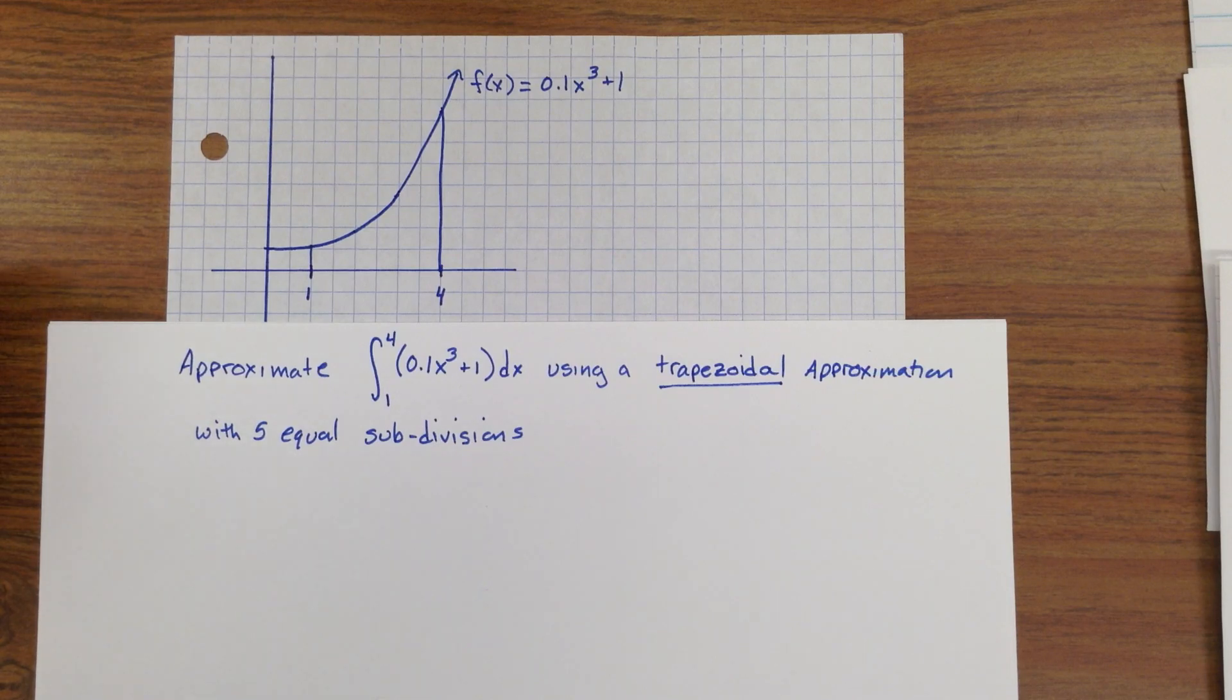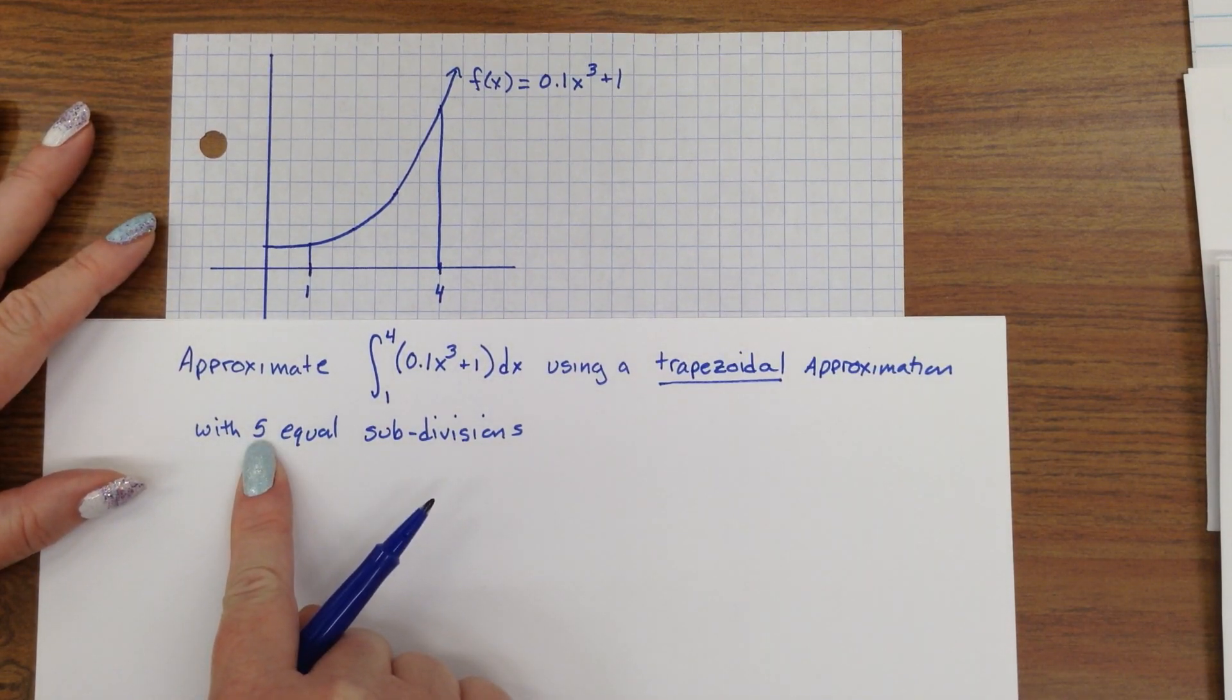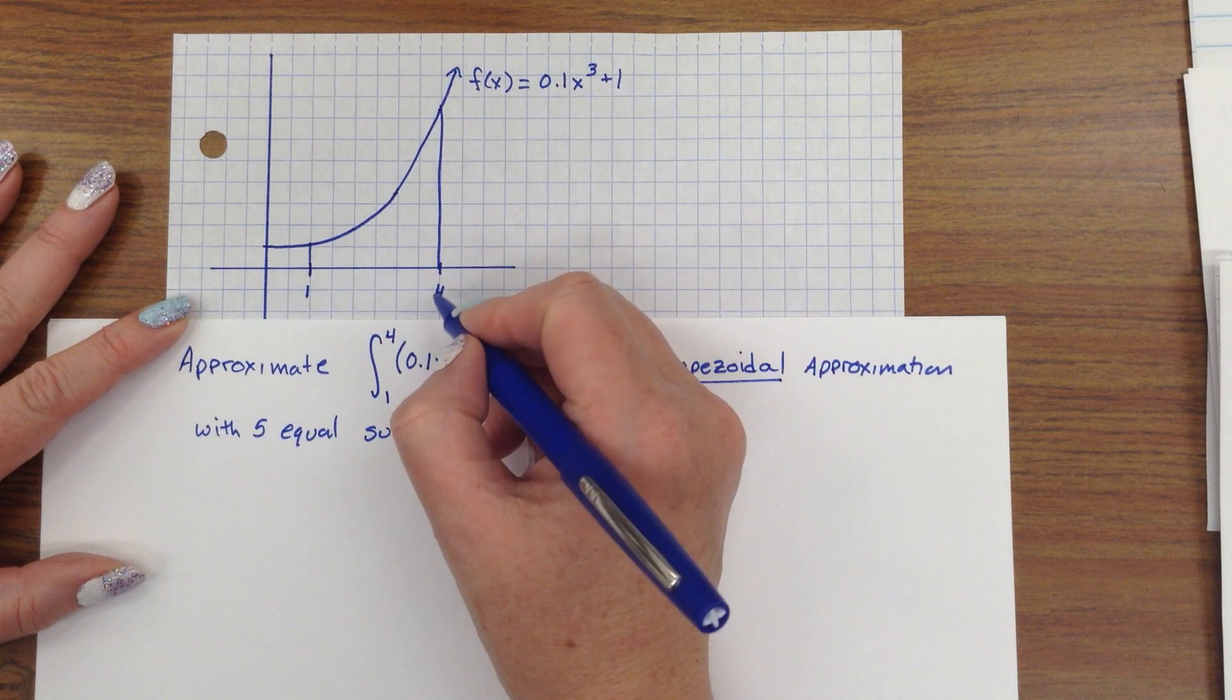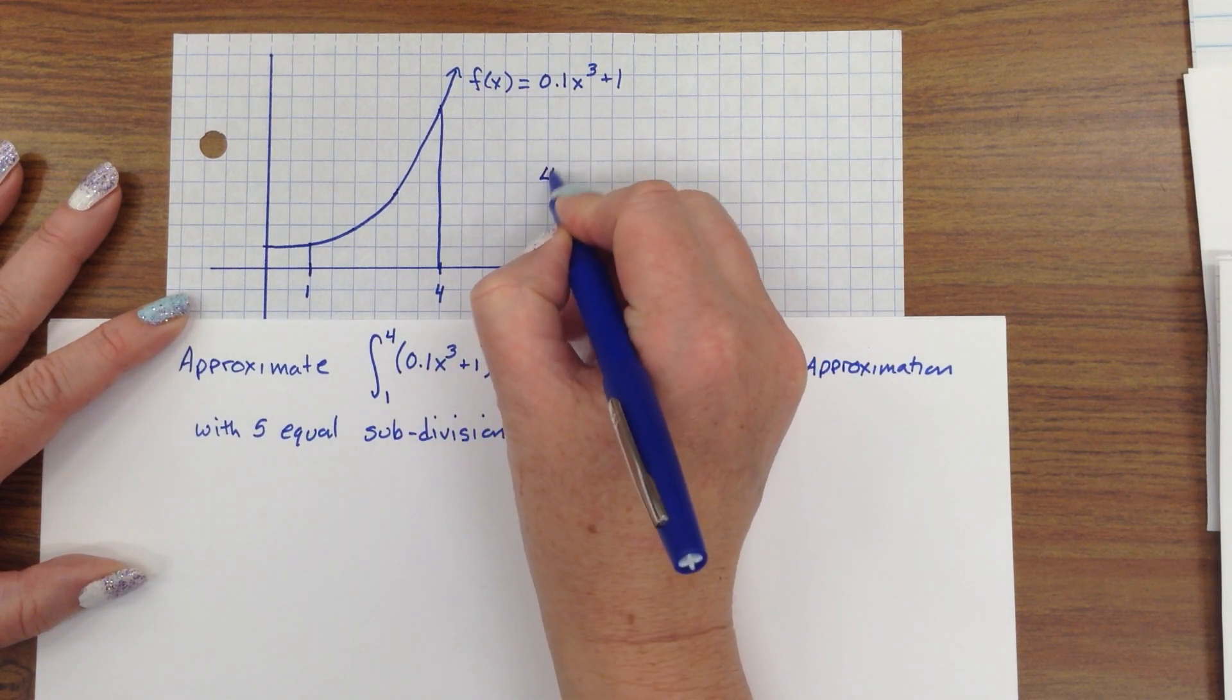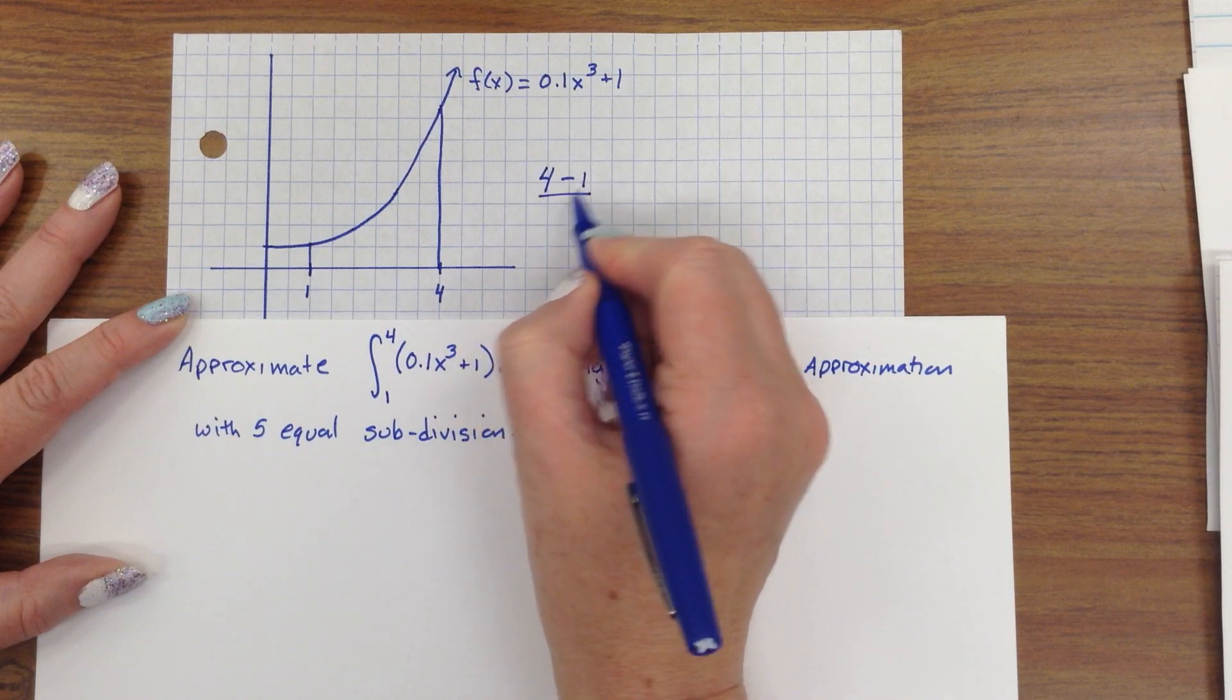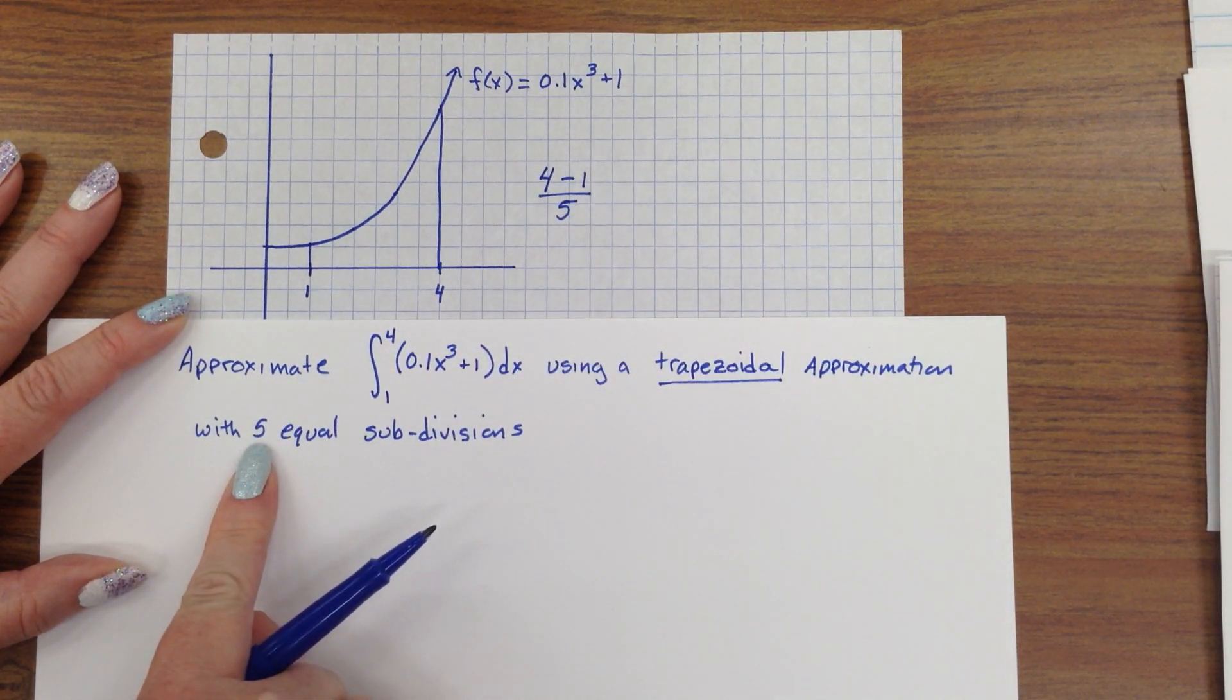All right, the next thing that we're going to do, and we've done this before, is we need to cut this up, because it says so, into five equal pieces. Fairly straightforward process. Here we go.